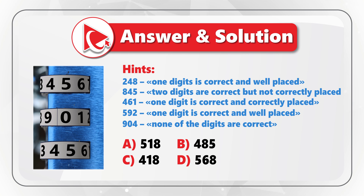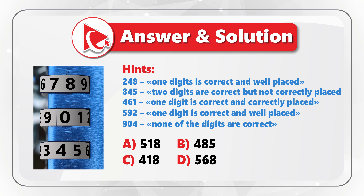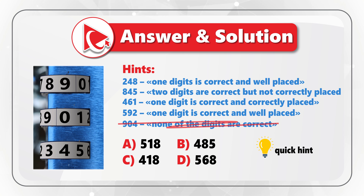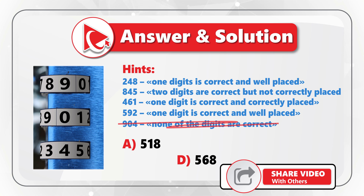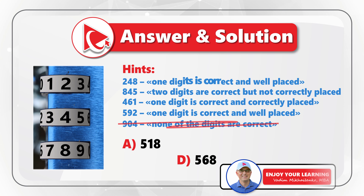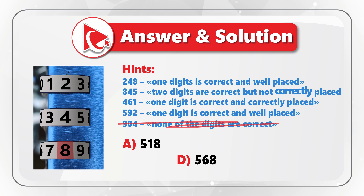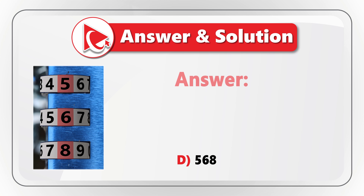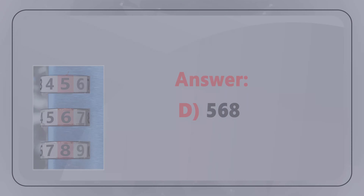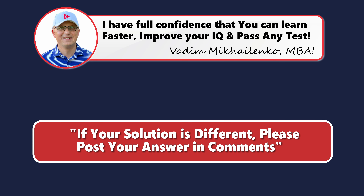You solve this problem through elimination. Starting with hint 5, since none of digits 9, 0, 4 are correct, we can eliminate choices B and C because both contain digit 4. From the remaining hints: in hint 1, digit 8 is the one correctly placed. In hint 2, digits 8 and 5 are correct but not correctly placed. In hint 3, digit 6 is correct and correctly placed. In hint 4, digit 5 is correct and well placed. Based on this, the correct answer is Choice D: 5, 6, 8.